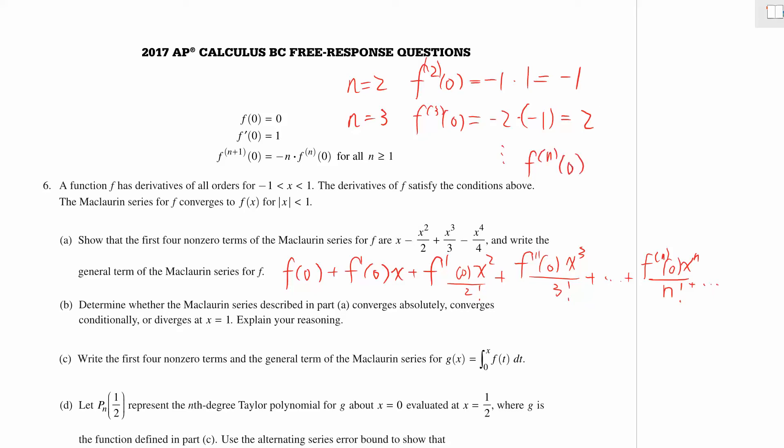f^n(0) equals (-1)^(n+1) times (n-1)!. So if we just plug that in, we have the general term which is (-1)^(n+1) times (n-1)! times x^n over n!. We can actually cancel off because n! is just 1 times all the way to (n-1) times n.